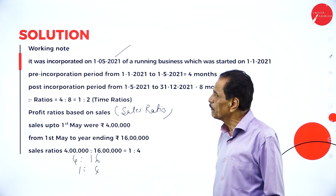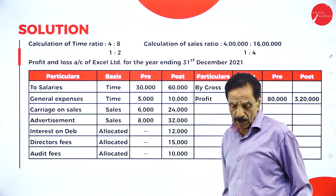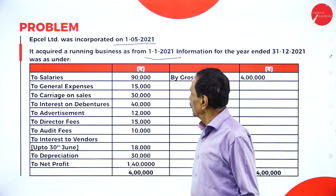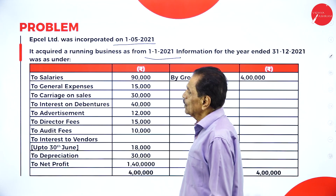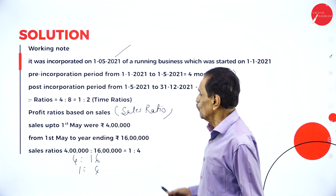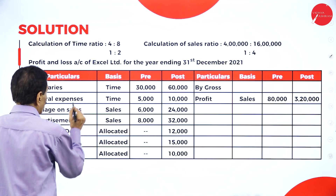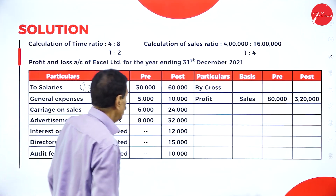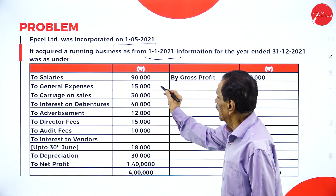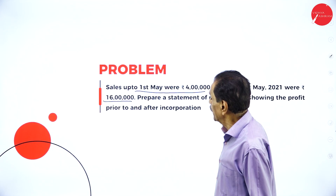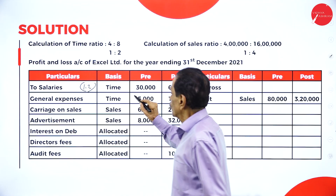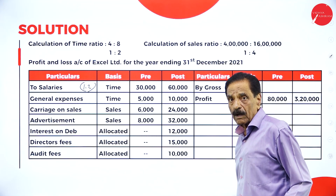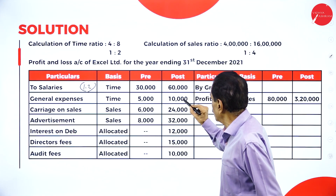Salary is allocated based on time ratio. Total salary is 90,000. Distributed in the ratio of 1 is to 2: one-third of 90,000 is 30,000 goes to pre-incorporation; two-thirds, which is 60,000, goes to post-incorporation. General expenses total 15,000 on time ratio: 5,000 goes to pre-incorporation and 10,000 to post-incorporation.